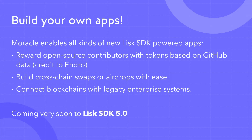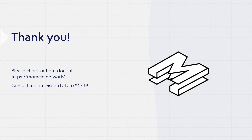Moracle enables all kinds of new Lisk SDK powered apps. You could reward open source contributors with tokens based on GitHub data. Credit to Tom from Endro for that idea. You could build cross-chain swaps or airdrops with ease. And perhaps most importantly, you can connect blockchains with legacy enterprise systems. This is all coming very soon to Lisk SDK 5.0. If you want to learn more, you can check out our website at moracle.network or contact me directly on Discord. Thank you so much for watching.